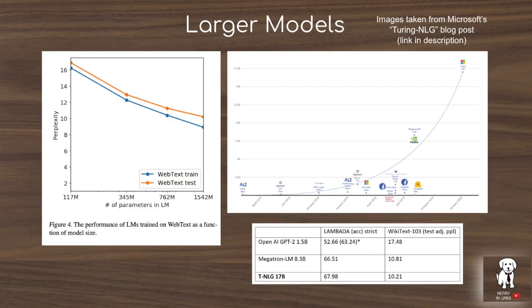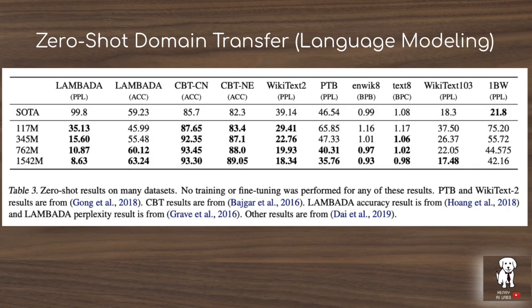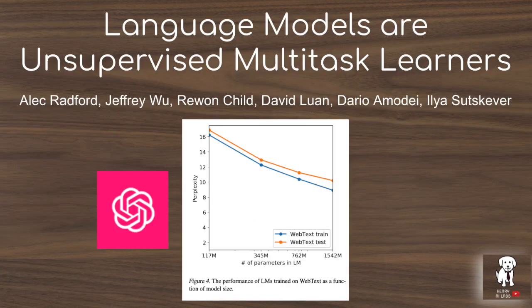GPT-2 more than 10x's the parameter count of GPT and trains it on a much larger dataset scraped and filtered from Reddit. GPT-2 is able to generalize to language modeling on datasets it hasn't been trained on before, a setting described in machine learning research as zero-shot learning. GPT-2 is also able to perform zero-shot task transfer, such as question answering and translation without any supervised learning on these tasks, done just by carefully prompting the input to the language modeling task.